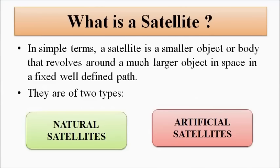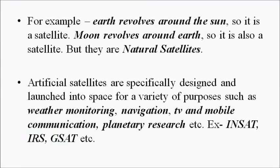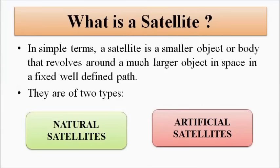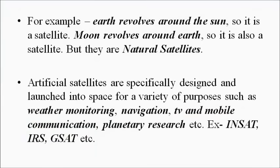There are two types of satellites: natural satellites and artificial satellites. The Earth revolves around the Sun in a fixed, well-defined orbit, and the Moon revolves around the Earth. The size of the Earth is smaller than the Sun, and the size of the Moon is smaller than the Earth. So in a way, the Earth and Moon behave as satellites — they are called natural satellites because both follow this definition.